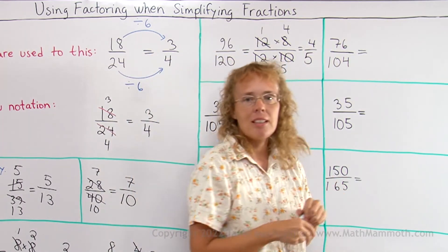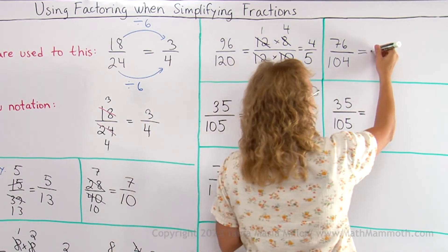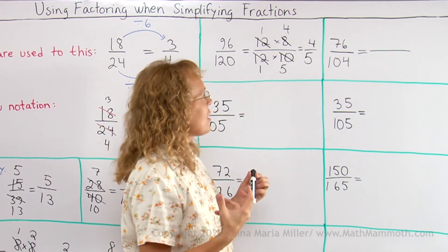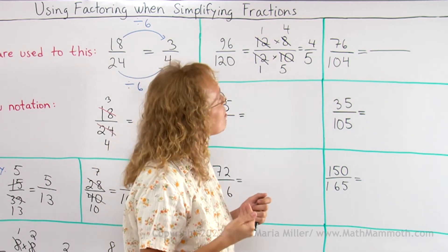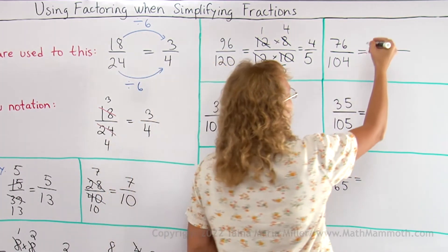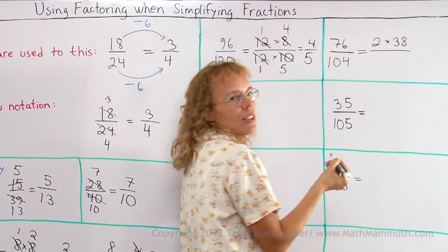76 over 104. Now like I said again, I want to write both of those numbers as something times something. I need to factor them. So what is 76 divisible by? I mean it's an even number. Yeah, it's 2 times 38. So I guess we can try that. See what happens. It's also divisible by 4.